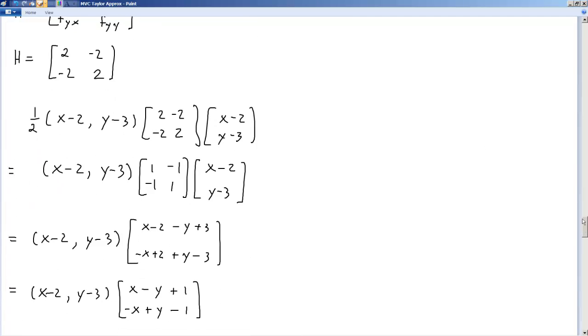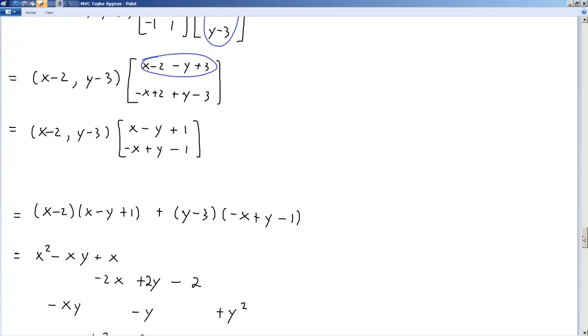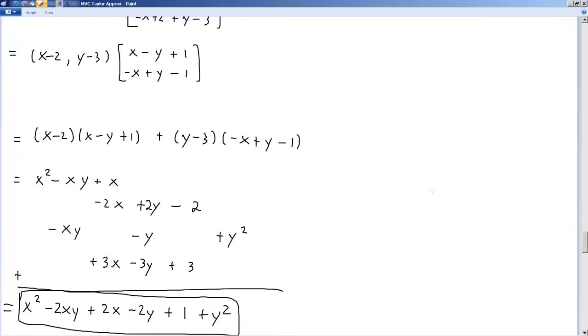And then we go through and we do, again, the math. This times this. Note, first of all, that I got rid of the one half because I just took all these twos and divided them by two. So, this by this gives us that.